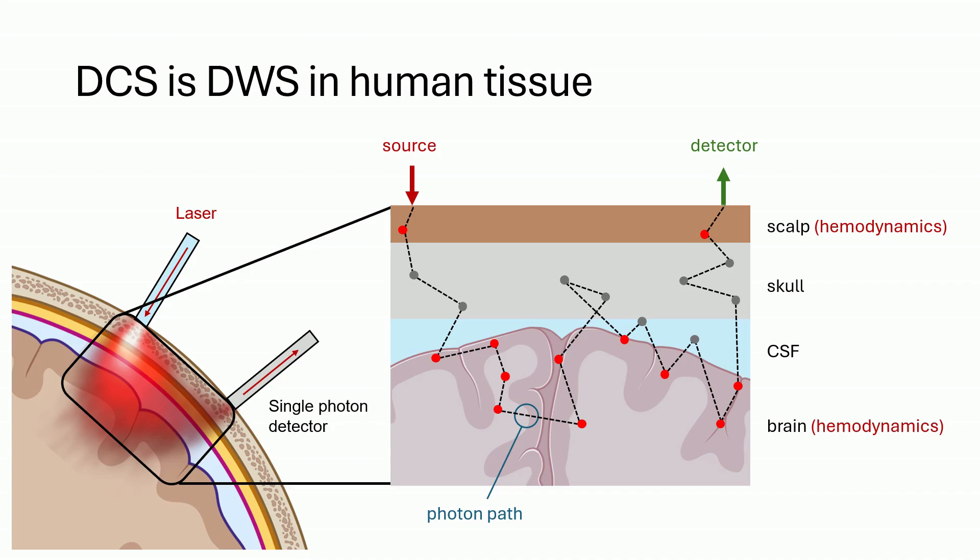We have our photon path, red blood cells, and static or unmoving scatterers. In reality, many photons will have traversed paths such as these.